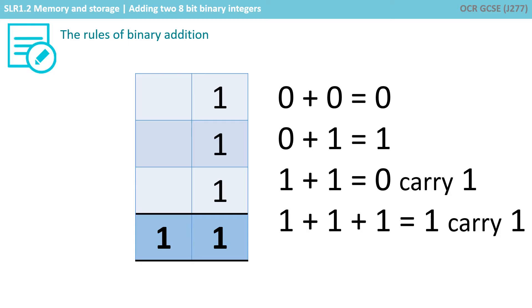And finally, 1 plus 1 plus 1 in denary is 3, but we can't have 3, so it's 1 carry a 1. 11 in binary is 3 in denary — that's a 1 in the 2 column plus a 1 in the 1 column. These are the only four rules you're going to need at a GCSE level when adding together two 8-bit binary numbers.